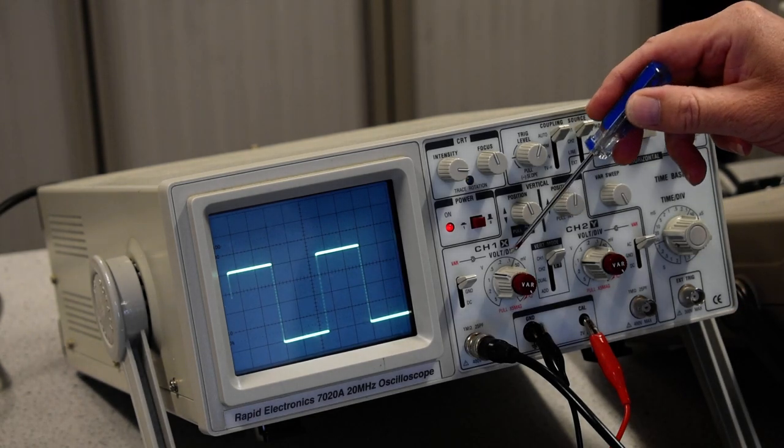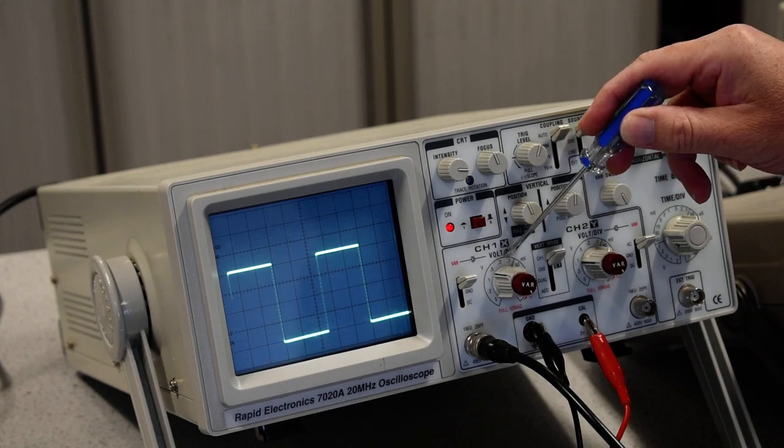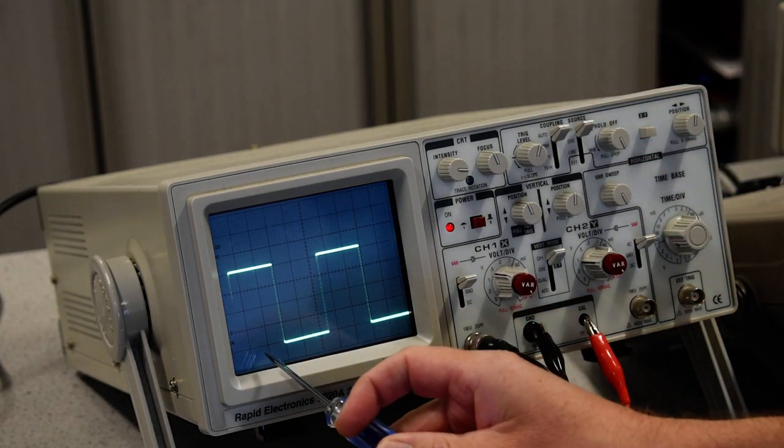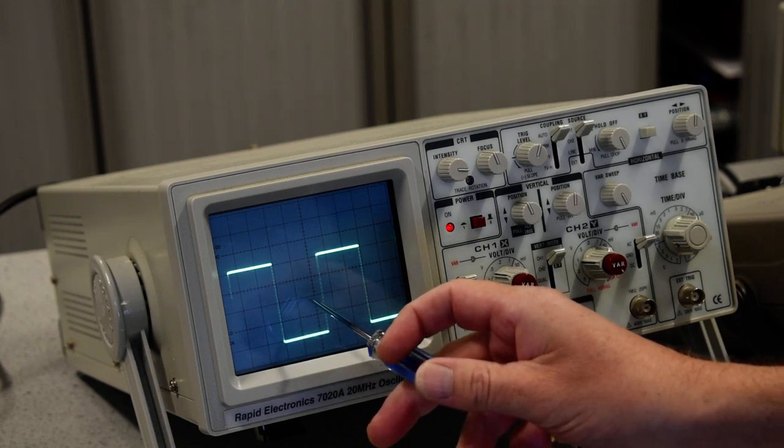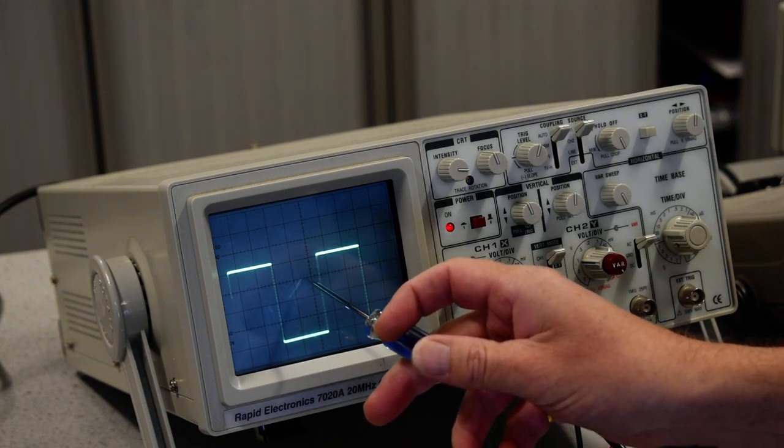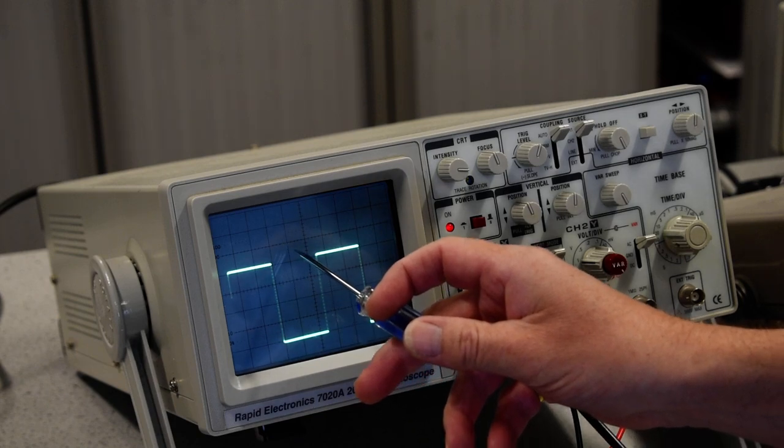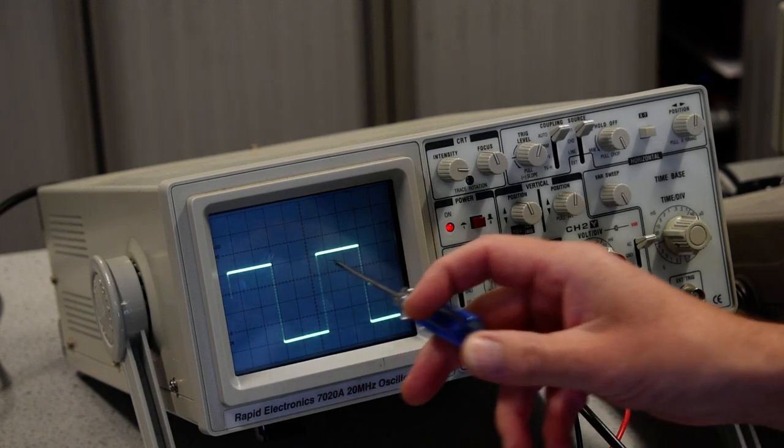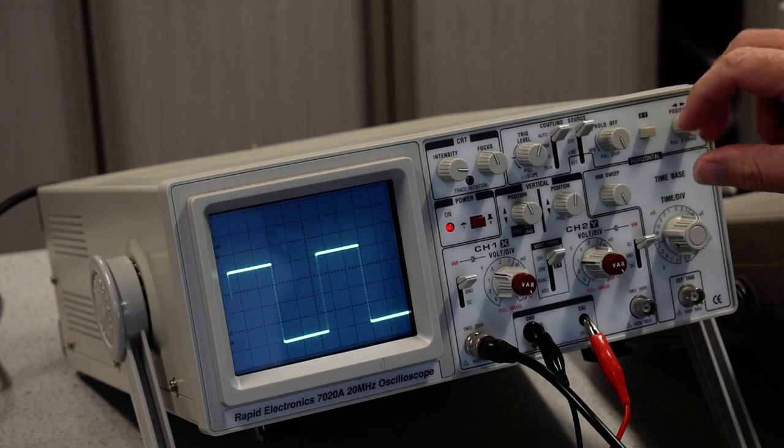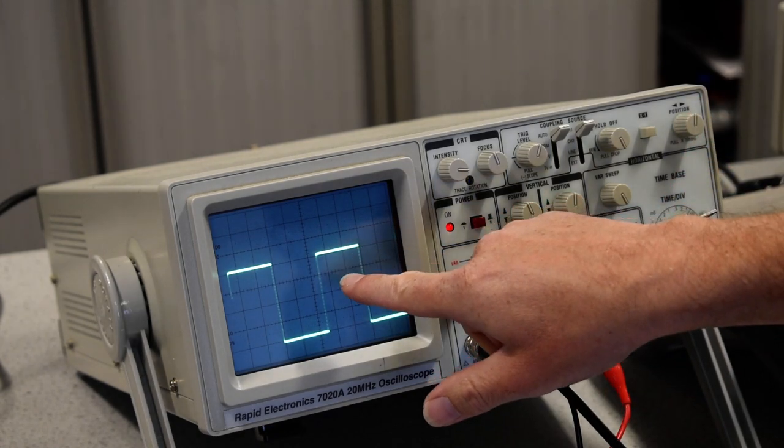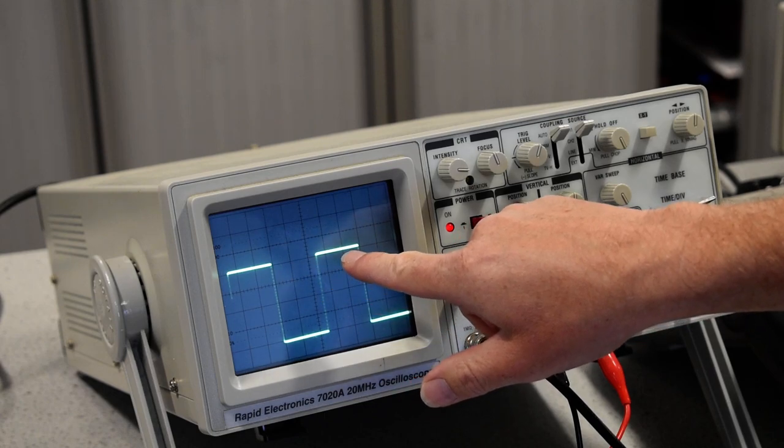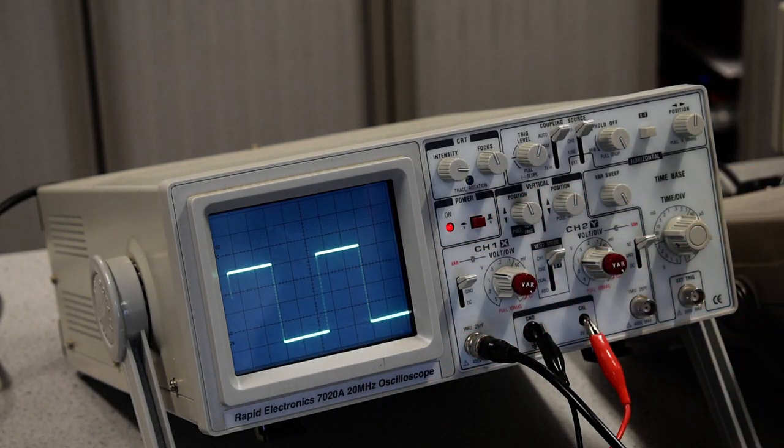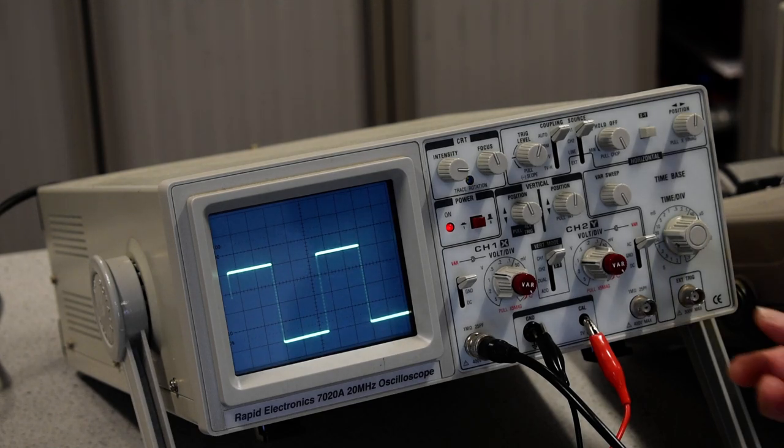The scale we've got just now is 0.5 volts per division. If we start from that grid line there, we're going up 0.5, another 0.5 is 1, 1.5, 2 volts. And what we can see at the moment is the top of that square wave appears to be just above the 2 volts. So it's not displaying accurately on the screen 2 volts peak-to-peak.